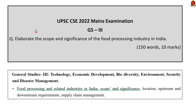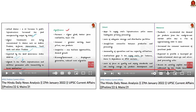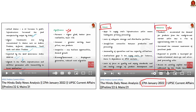Look at question number 4 in GS Paper 3: 'Elaborate the scope and significance of food processing industry in India.' We covered all aspects of this question in our 27th January 2022 Hindu News Analysis — covering what is food processing, relevance of the food processing sector, its status in India, significance, issues, and government measures to address those issues. From this one video, you can answer this question entirely.